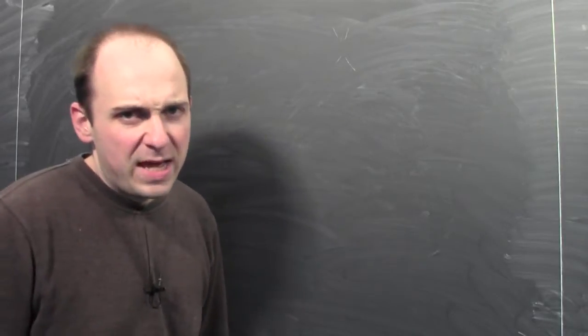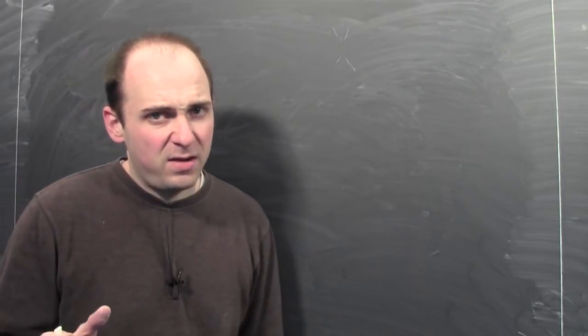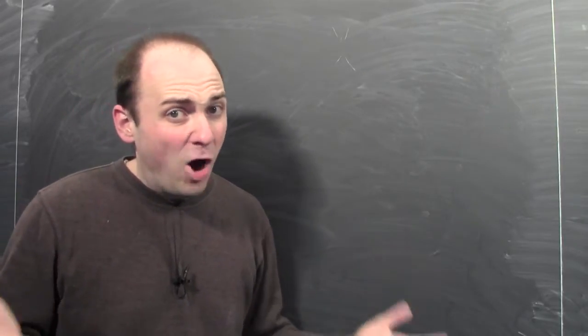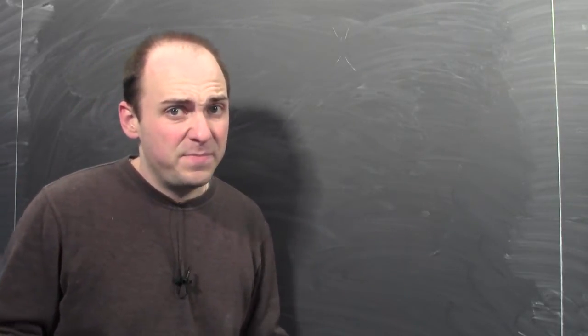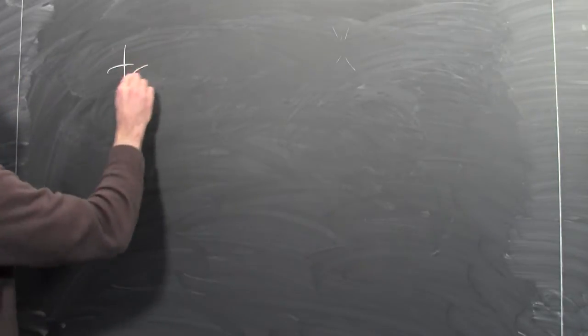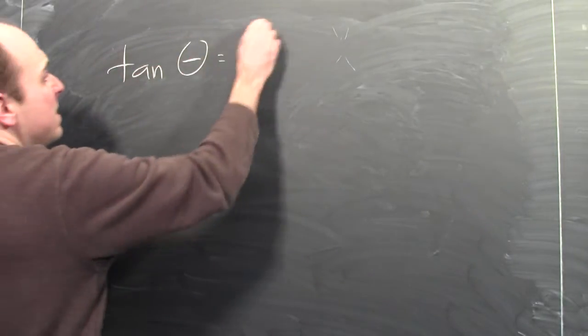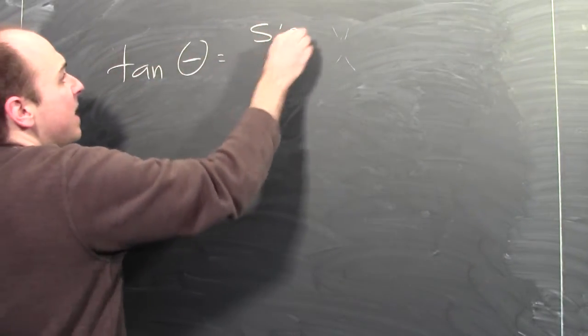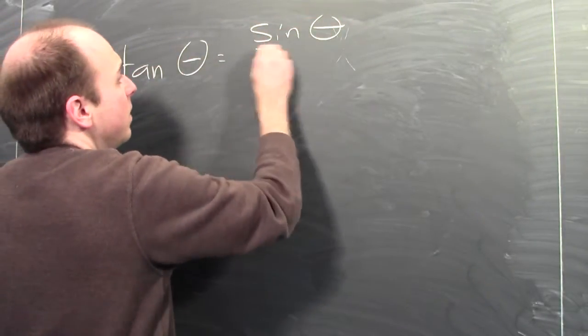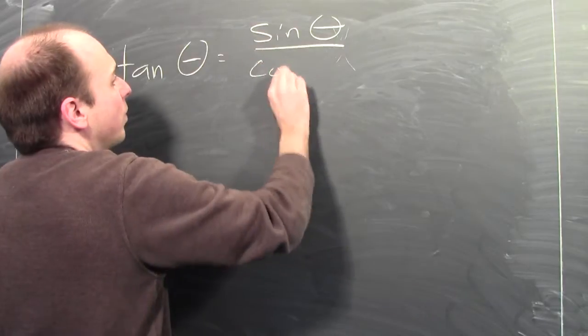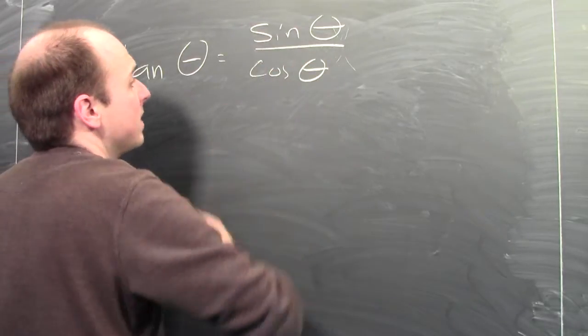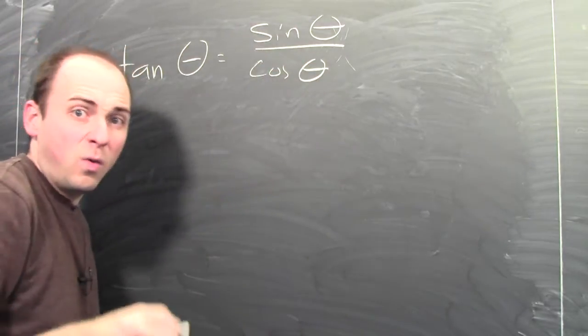I want to differentiate tangent theta. How am I going to do this? You hopefully remember that tangent theta is sine theta over cosine theta.